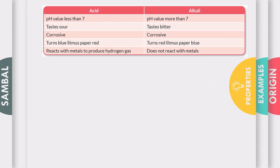The properties of acid and alkali: acid has a pH value less than 7, hence they taste sour and they are corrosive. They change the litmus paper from blue to red, and they also react with metal to produce hydrogen gas.